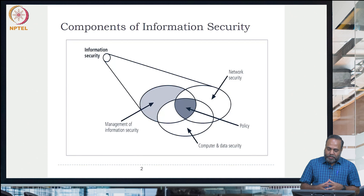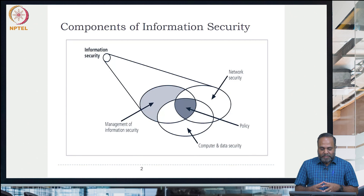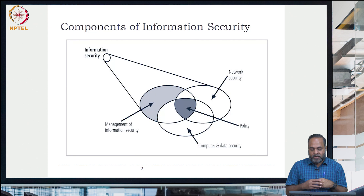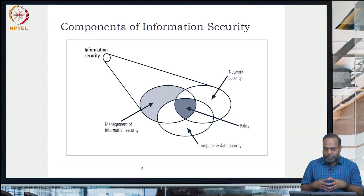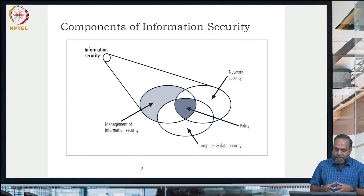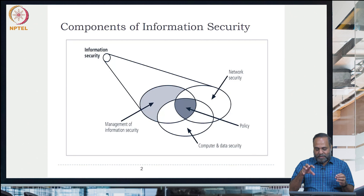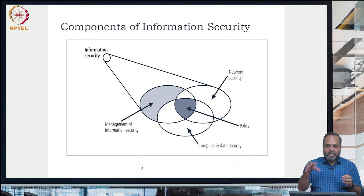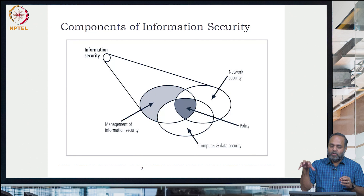You can understand it from multiple dimensions. There are three major dimensions with Information Security as the central concept, and three concentric circles which constitute three dimensions: network security, computer and data security, and management of information security. At the intersection, you see a shaded area which emerges from the management perspective and is common to all three.